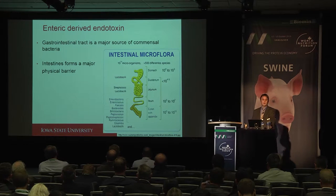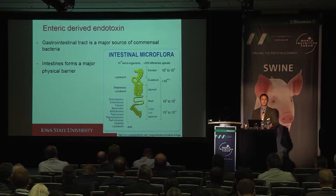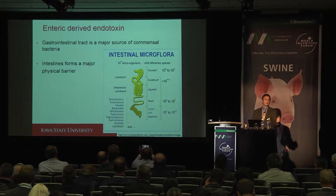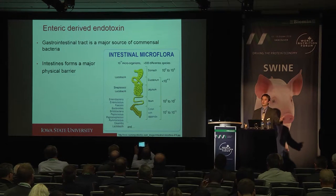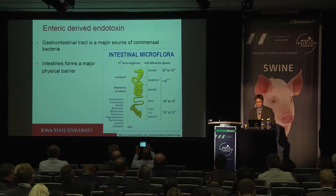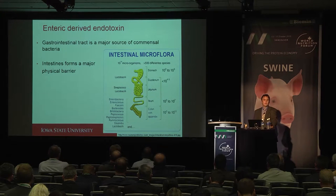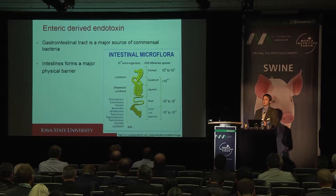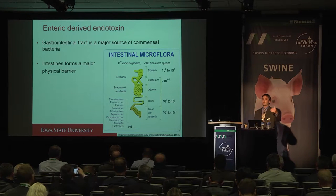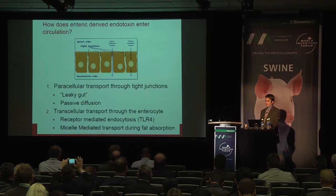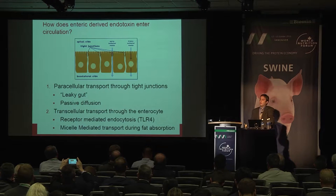For most of this talk we'll focus on enteric-derived endotoxin. The gastrointestinal tract is a major vessel containing a lot of gram-negative bacteria — not all of which are pathogenic. Endotoxin can come from both pathogenic and non-pathogenic bacteria; really it's the O antigen that determines pathogenicity. As the previous speaker discussed, the GI tract forms both a physical and secretory barrier between the lumen — where bacteria, viruses, and other microbiota reside — and the actual body.